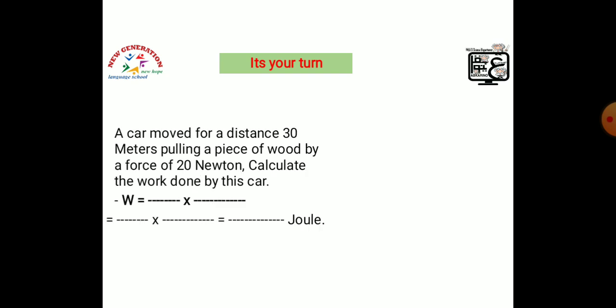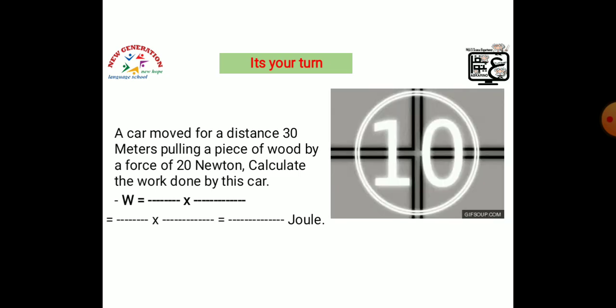Now it's your turn. A car moved for a distance of 30 meters pulling a piece of wood by a force of 20 Newton. Calculate the work done by this car. You have 10 seconds.